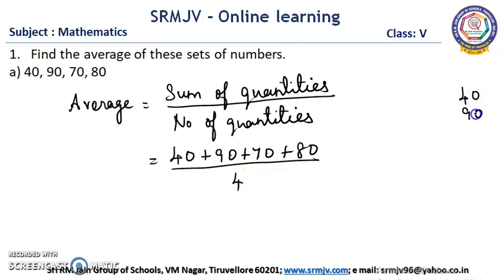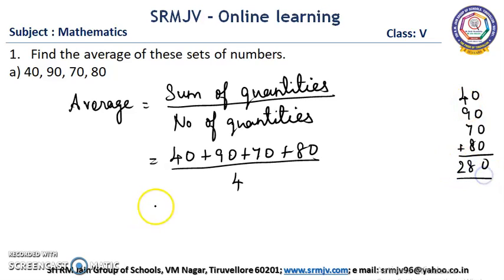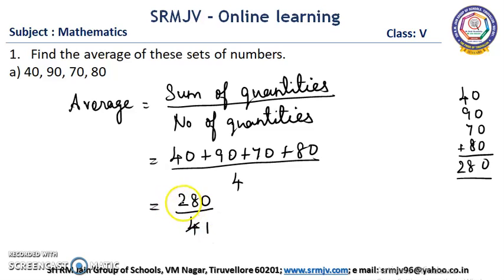That is 40 plus 90 plus 70 plus 80. Here: 8 plus 7 is 15, 15 plus 9 is 24, 24 plus 4 is 28. So the sum of quantities is 280, divided by 4. Now we can cancel the numbers in the 4 table. In the 4 table, 7 times 28, and we add the 0. So the average is 70.